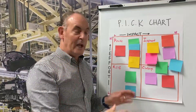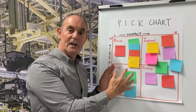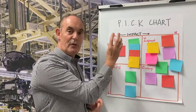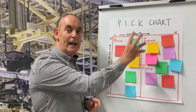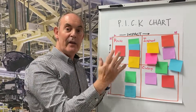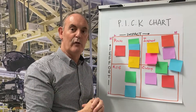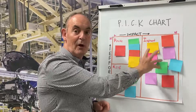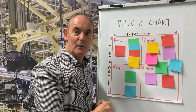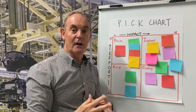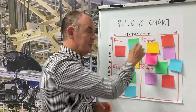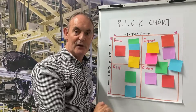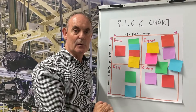Step number four, once you've got the ideas posted onto the chart, is to focus on the Possible and Implement quadrants — they're the ones you're going to tackle first. And if you've got multiple ideas in the same quadrant, try voting on those ideas as a team to make a further prioritization within that quadrant.